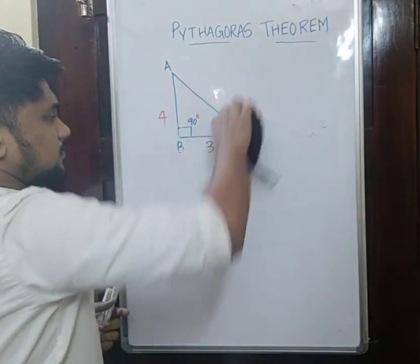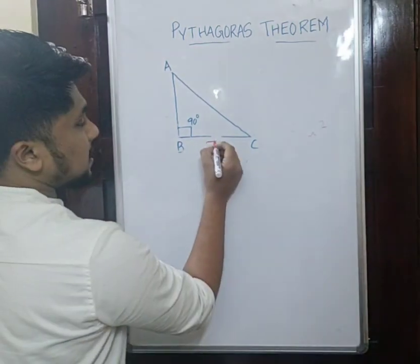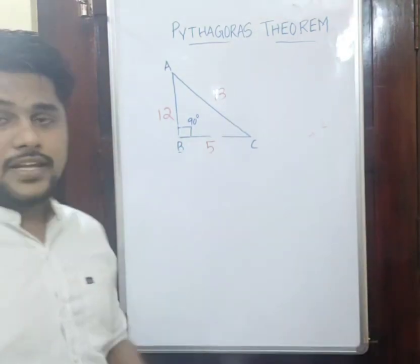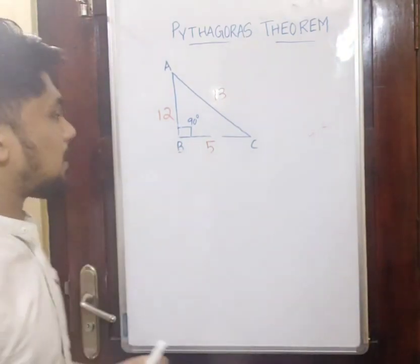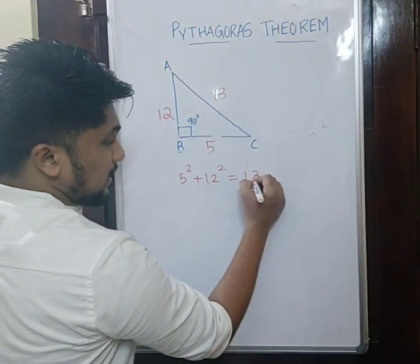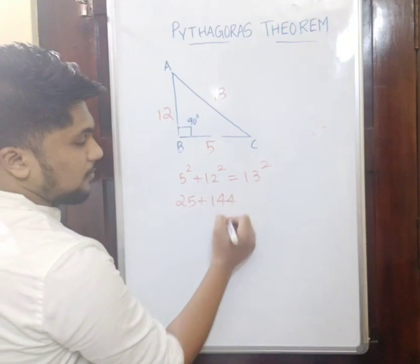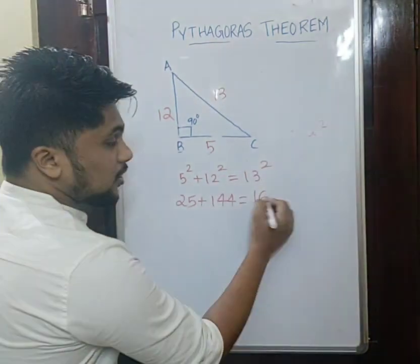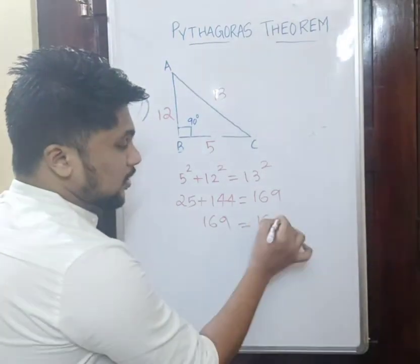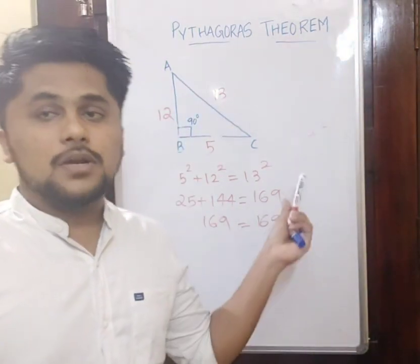Let's take another example. Everyone should remember that the hypotenuse should be the largest side. I am taking 5 and 12, and the hypotenuse is 13. Let's check whether Pythagoras is applicable: 5 squared plus 12 squared should equal 13 squared. 5 squared is 25, 12 squared is 144, and 13 squared is 169. 25 plus 144 equals 169, which equals 169. So the Pythagoras theorem is applicable here also.